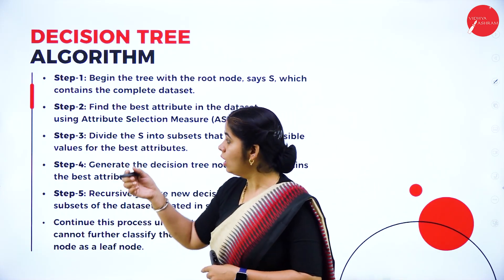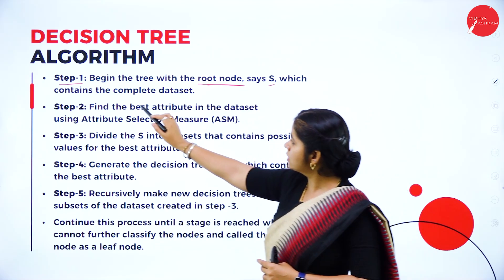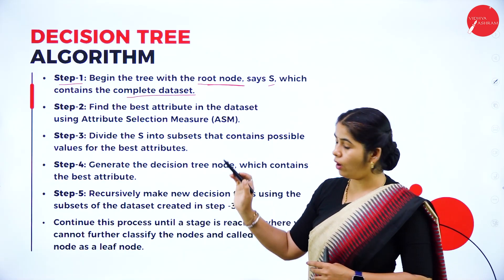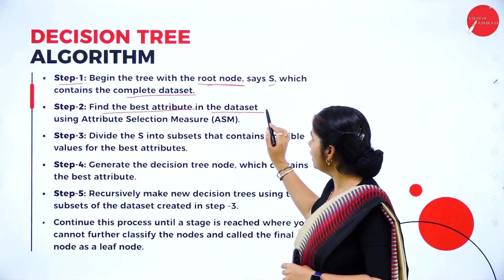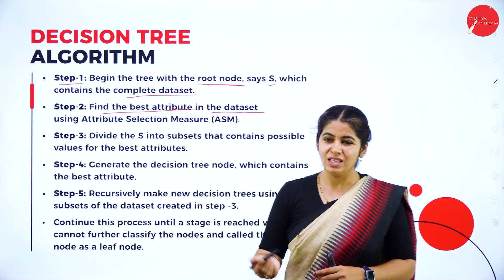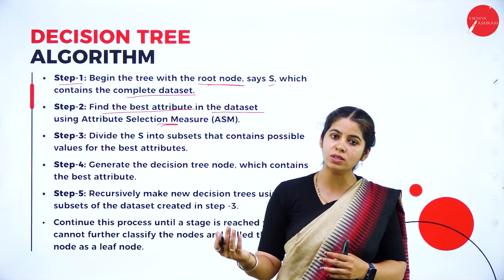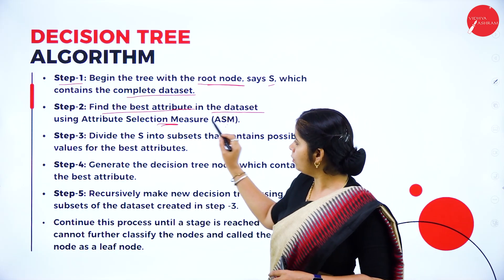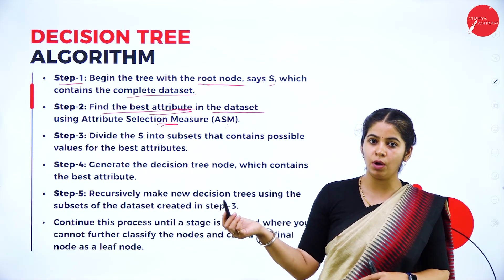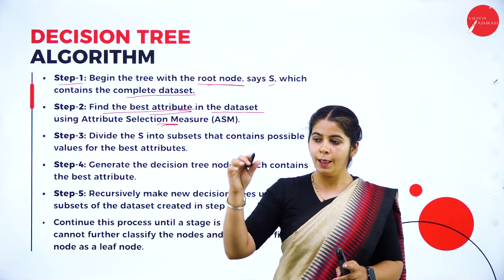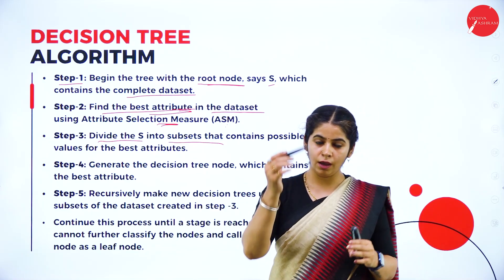The decision tree algorithm works step by step. Step one: begin the tree with the root node, which contains the complete data set. Step two: find the best attribute in the data set using the Attribute Selection Measure. For example, attributes like whether it is nearby, what is the fee structure, how the course is — depending on that attribute you select the best one first. For example, if the fee structure is feasible, go ahead; if not, go to no.